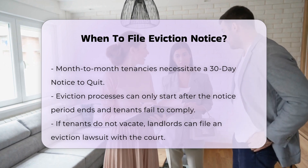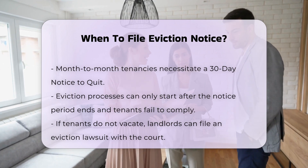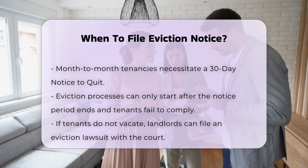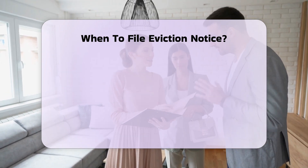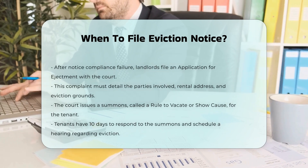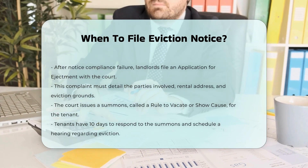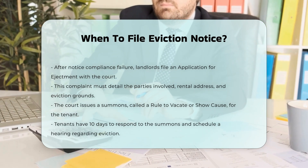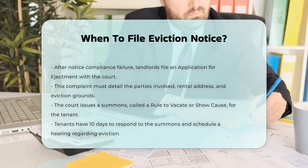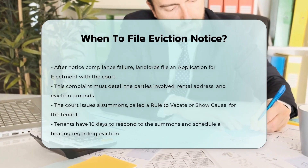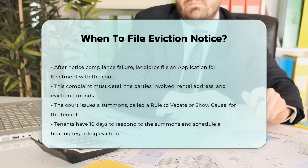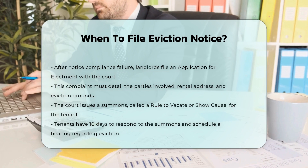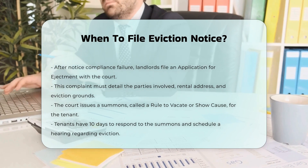Court involvement. After serving the appropriate notice, if the tenant does not comply, the landlord files a complaint with the court, known as an application for ejectment. This complaint must include details such as the names of the parties involved, the address of the rental premises, and the grounds for the eviction. The court will then issue a summons, known as a rule to vacate or show cause, which the tenant must receive within a specified timeframe. The tenant has 10 days to respond to this summons and schedule a hearing to show cause why they should not be evicted.